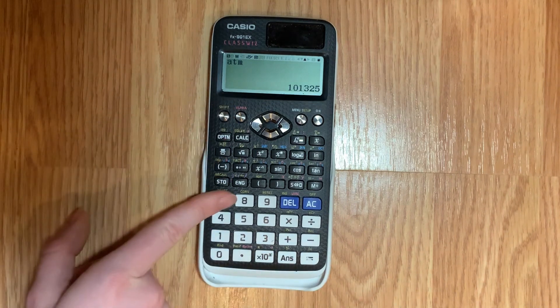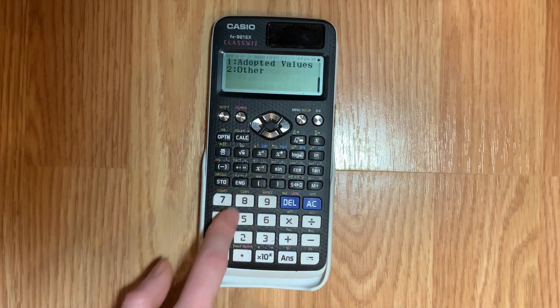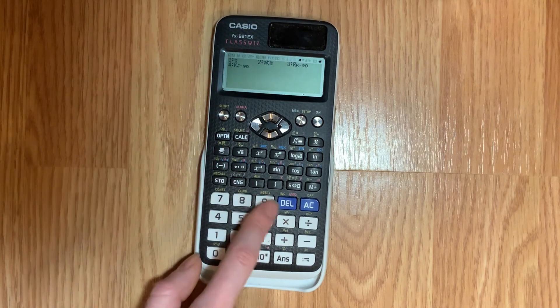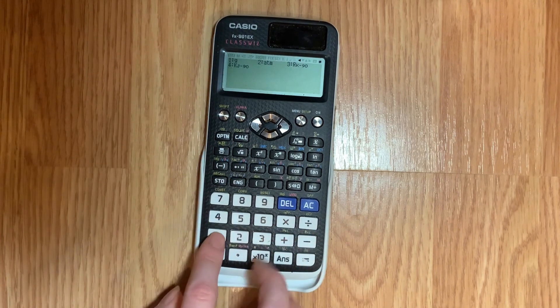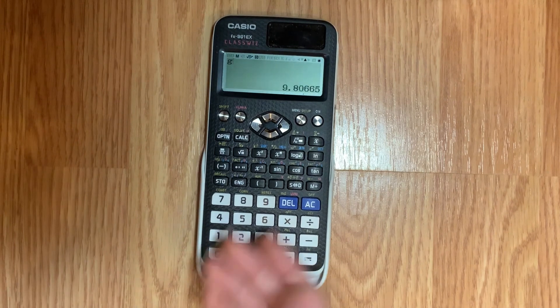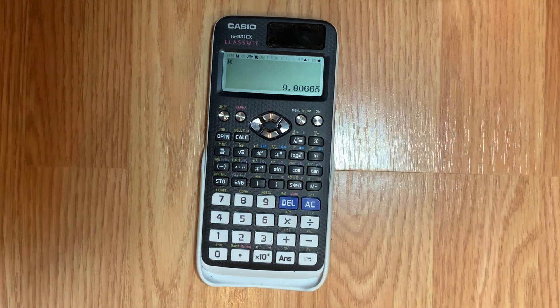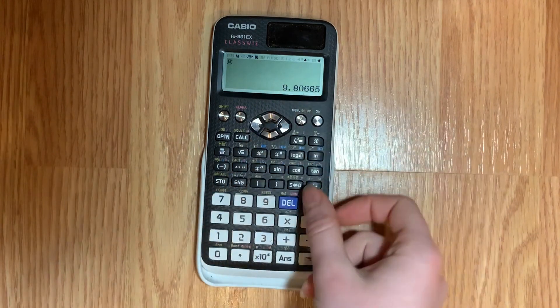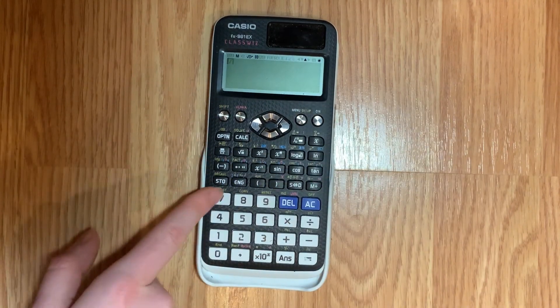And then that little g is gravity. So I'll push one for little g. Gravity 9.8 meters per second squared but apparently it has more than that so yeah.